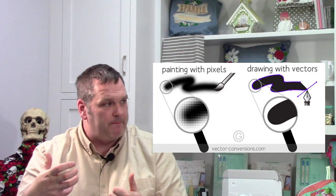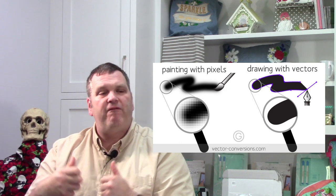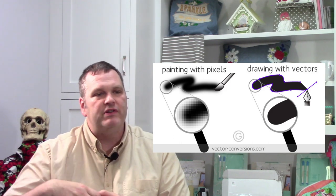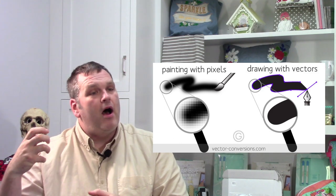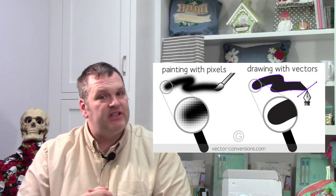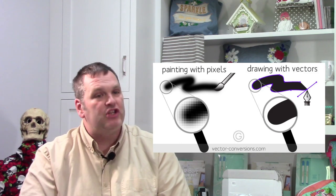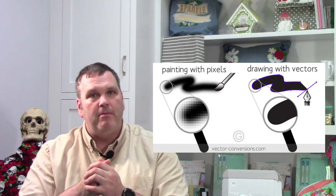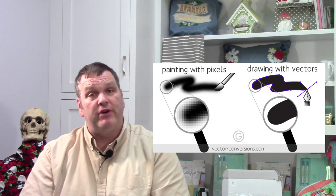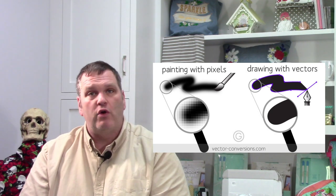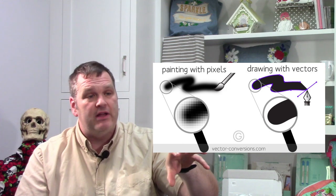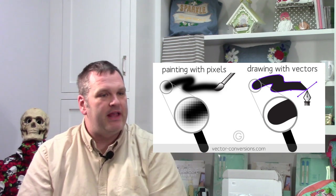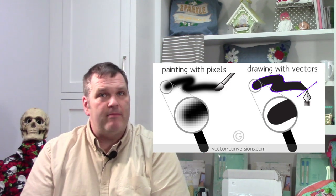That's the difference between the file formats of raster versus vector. A raster image is done with pixels — your JPEGs, your bitmaps, your PNG files are all raster images. So if you zoom in on a raster image, it's going to pixelate, like you see in that picture there.